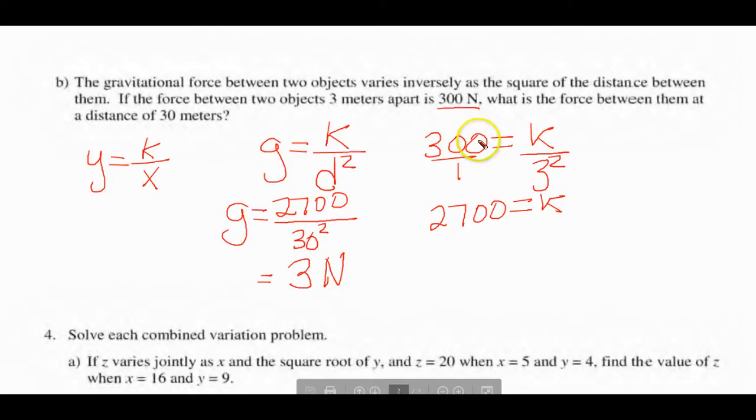Once again, inverse variation. Put the letters from the information they give you, substitute the values. Find what K is. Once you find what K is, you put in your new information, and then they'll get your new answer.